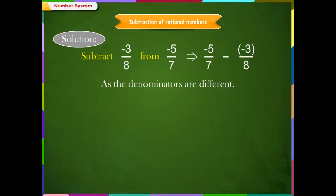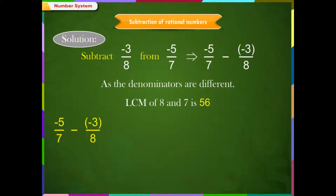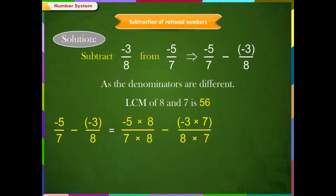As the denominators are different, the LCM of 8 and 7 is 56. Minus 5/7 equals (minus 5×8)/(7×8), which equals minus 40/56. Minus 3/8 equals (minus 3×7)/(8×7), which equals minus 21/56.